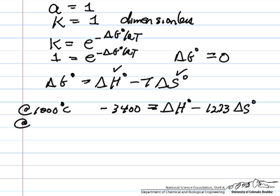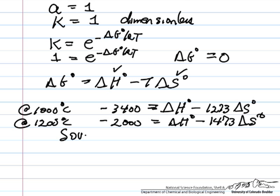And then we can write down at 1200°C, -2000 is the value we are given, same ΔH°, absolute temperature 1473, and the same ΔS°, and we basically can just solve these simultaneously.